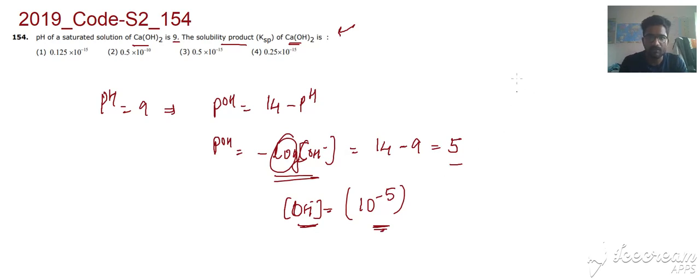We will see what is happening in the dissolution of Ca(OH)2. Calcium hydroxide is a solid which goes on to give us Ca plus 2 ions and 2 OH minus ions. This solid gives s and 2s.